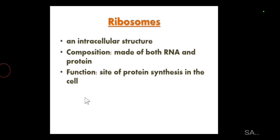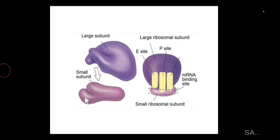Looking at the structure of the ribosome, ribosomes are not bound by or covered by a membrane — so there is no membrane. They are simply cell structures. If you go deeper inside them, you can see that ribosomes are made up of subunits.